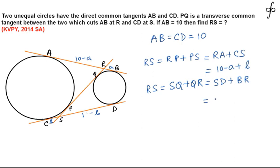RS can also be written as SD, so that is 10 minus B, 10 minus B plus BR, that BR is nothing but A.